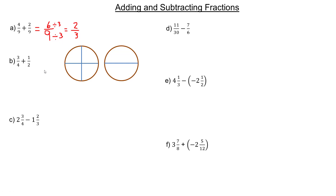Three-quarters is the first fraction. What three-quarters means is that you've got something like a pizza, for example, that has four parts altogether. And three-quarters means we have three of those four parts. If I shade in here like this, we have three of the four parts.